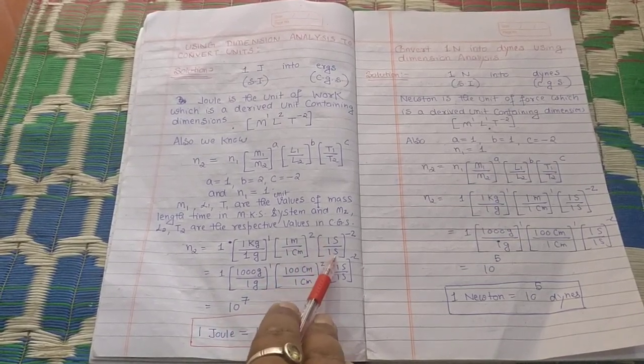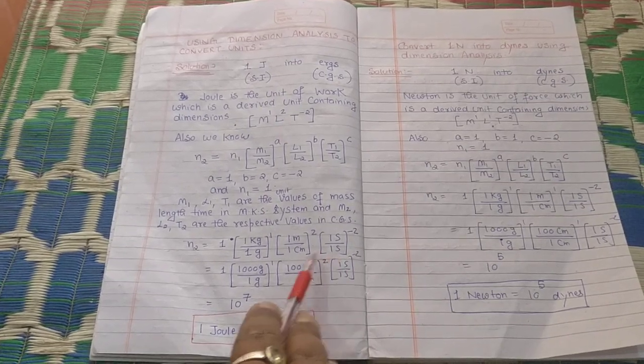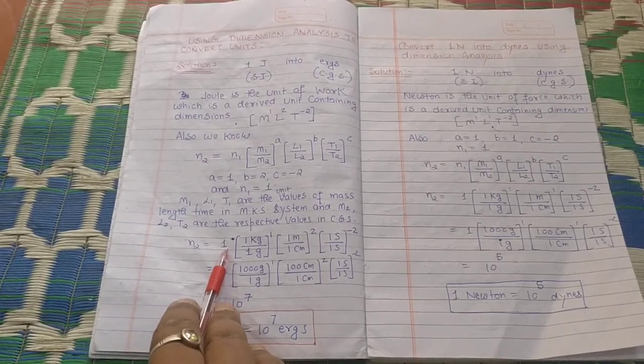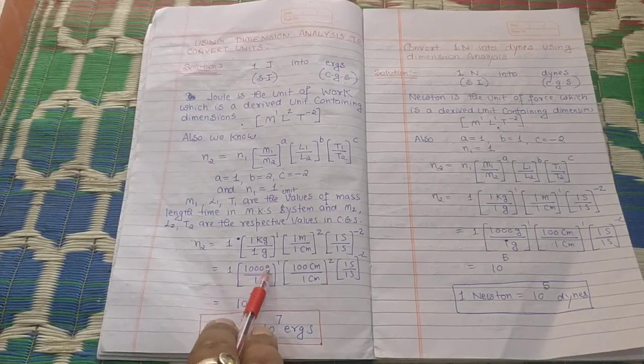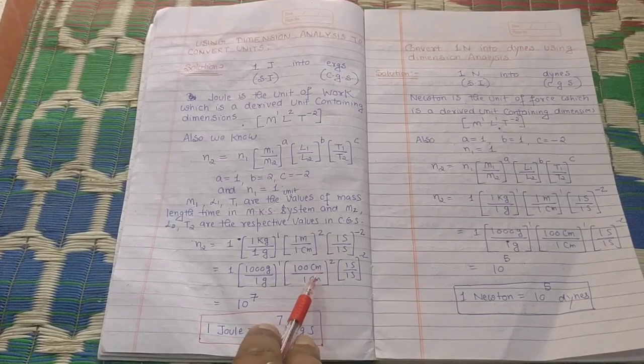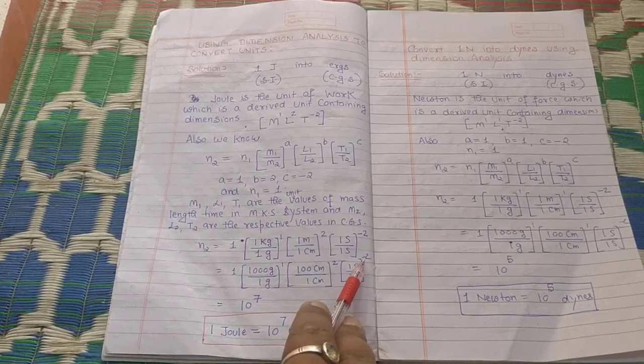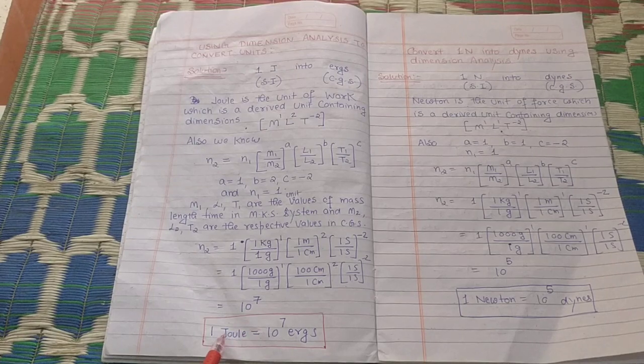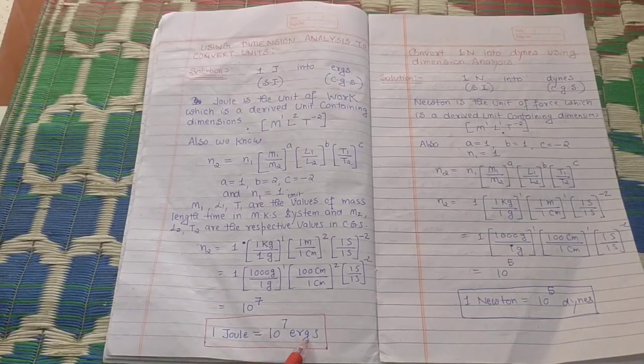Both are in seconds, so no need to convert. We need to convert 1 joule into ergs, so N₁ = 1. Therefore N₂ = 1 × (1000 gram / 1 gram)¹ × (100 cm / 1 cm)² × (1 s / 1 s)⁻². By solving, we get N₂ = 10⁷. So we can conclude that 1 joule = 10⁷ ergs.